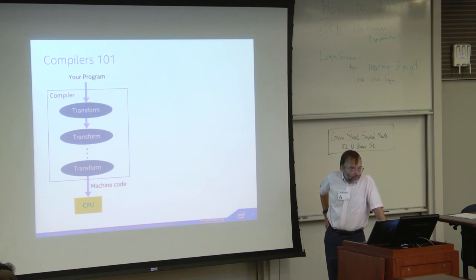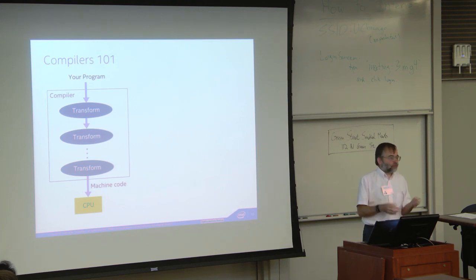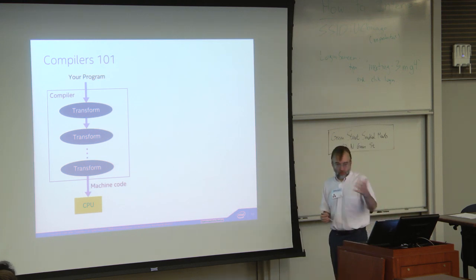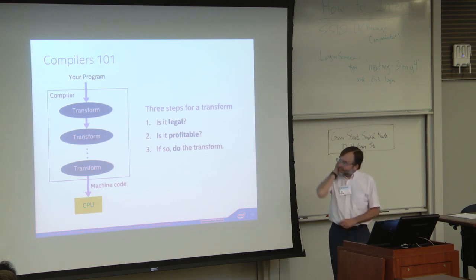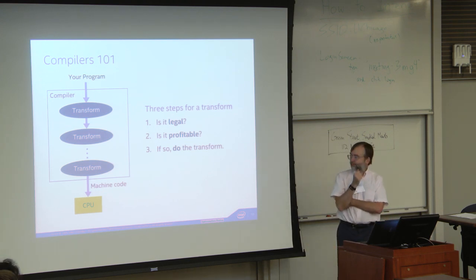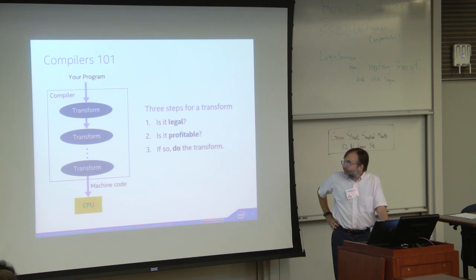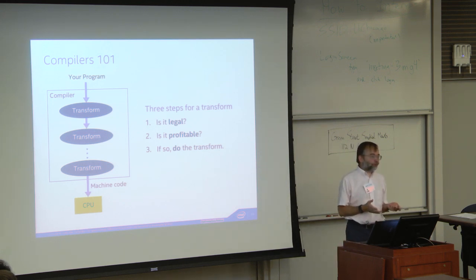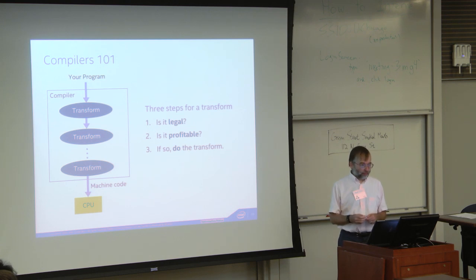Vectorization is a program transform. In a compiler, there are a bunch of transformers — you take your code and transform it until it's transformed into assembly code. For each transform, the compiler has to ask two questions: is the transform legal (does it preserve the semantics of the program), and is the transform profitable? For the legality question, if it doesn't know, it has to say no. For profitability, the compiler can just make a bet as long as it comes out ahead most of the time.